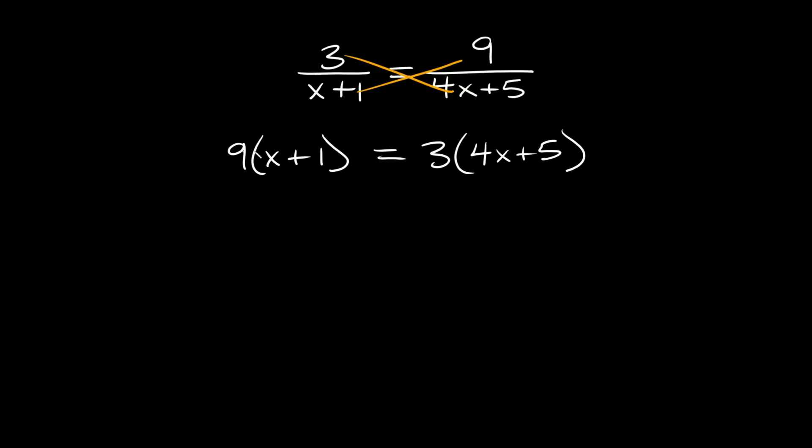Now we can simplify everything by multiplying it together. So 9 times x plus 1 equals 9x plus 9, and that equals this guy over here. We're just distributing. So 3 times 4x equals 12x and 3 times 5 is 15.